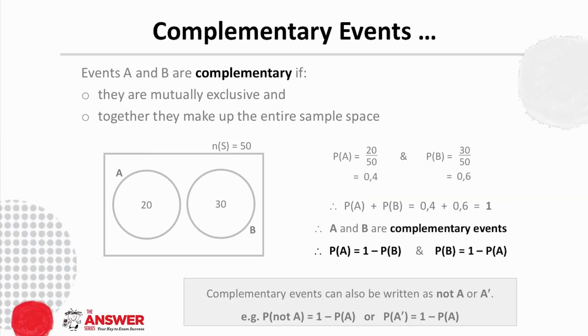Our next special case is complementary events. Two events are complementary if they are mutually exclusive and if together they make up the entire sample space. And because they make up the entire sample space, the sum of their probabilities is 1.